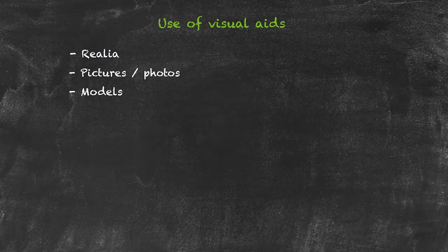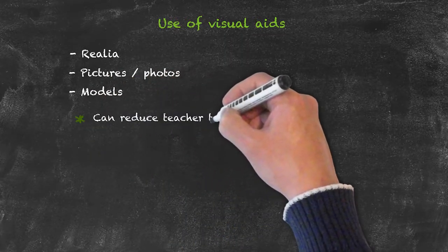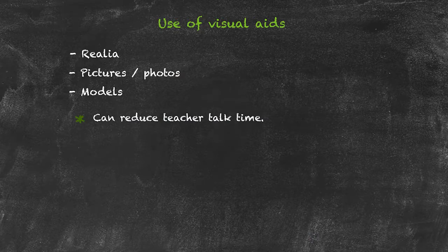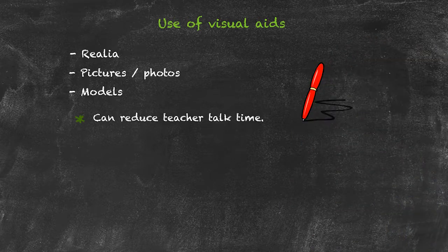Let's consider some of the ideas surrounding the use of visual aids and why they are useful. First of all, the use of a visual aid can reduce teacher talk time. It's very much more simple just to show a real object than to try to describe it, so we could just ask the students 'What is this?' and they would say 'This is a pen.'